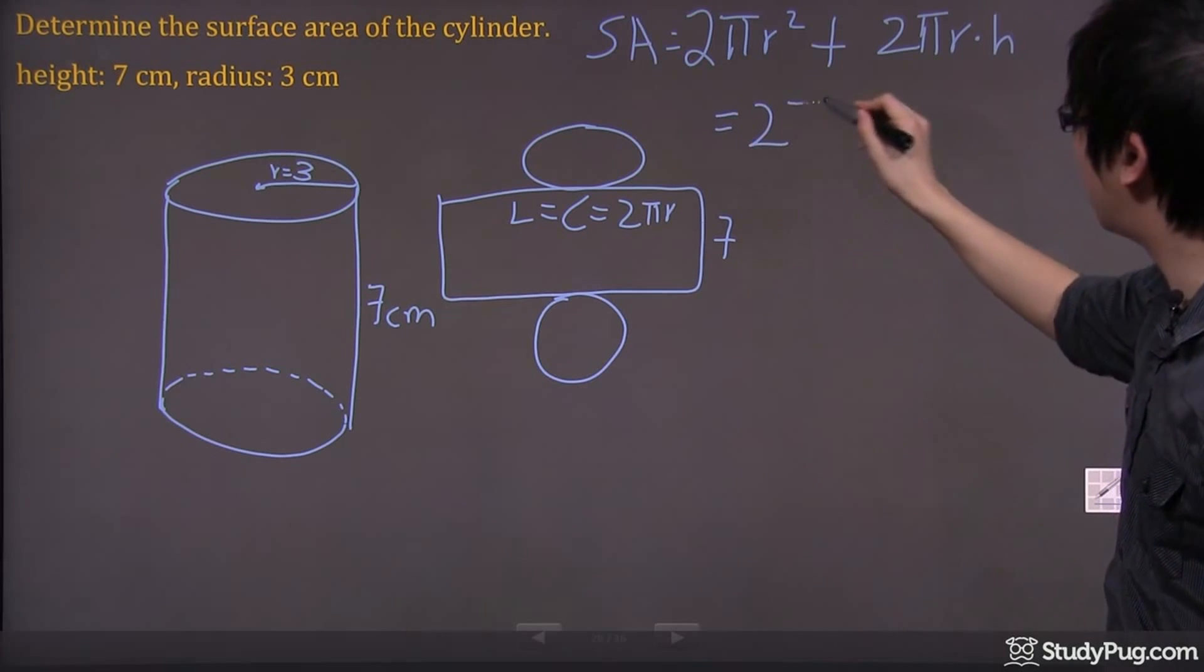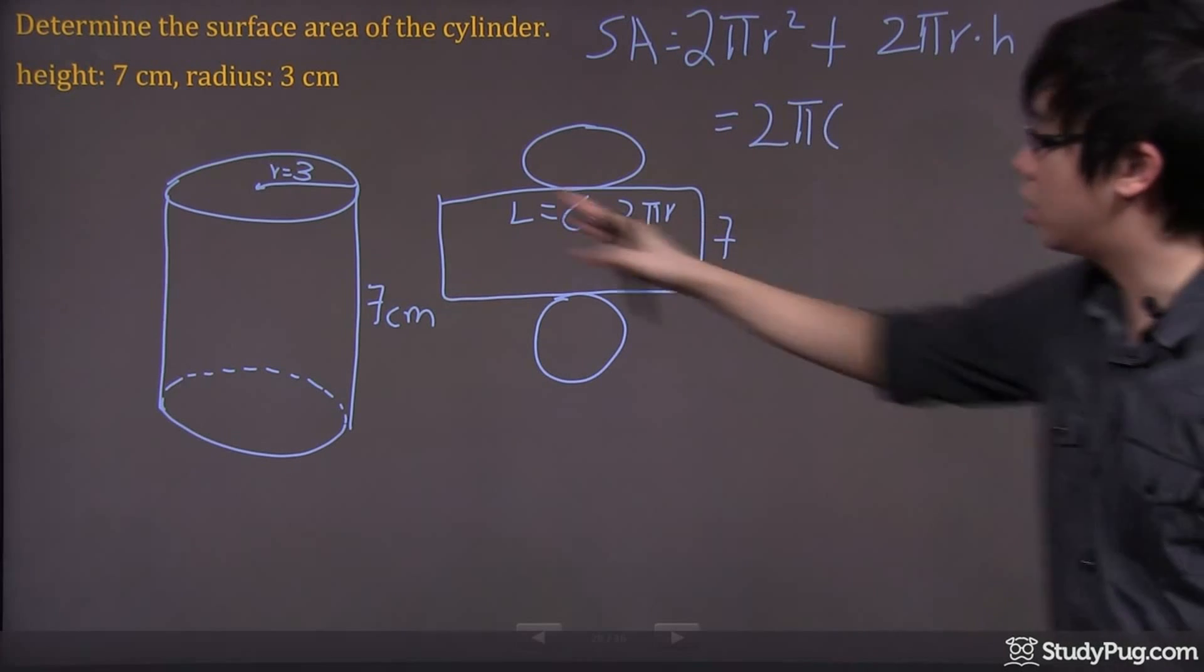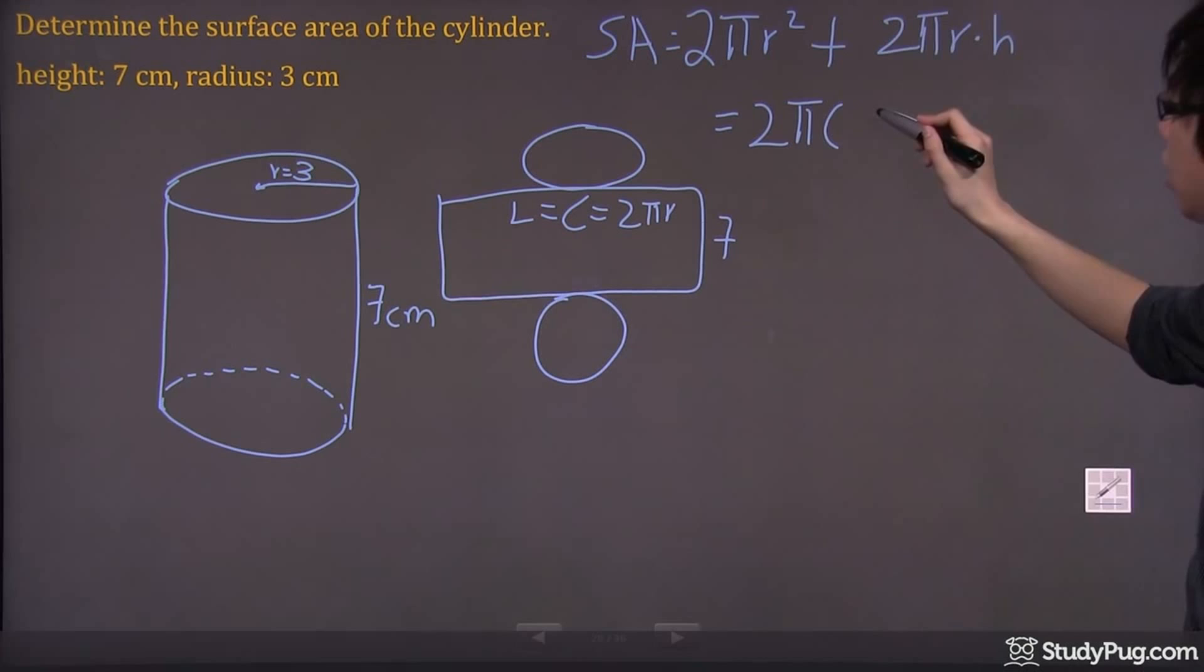I got 2 times pi times the radius. I was given the radius. It was 3 centimeters. I'm going to square that, plus 2 pi times 3, times the height, which is 7.